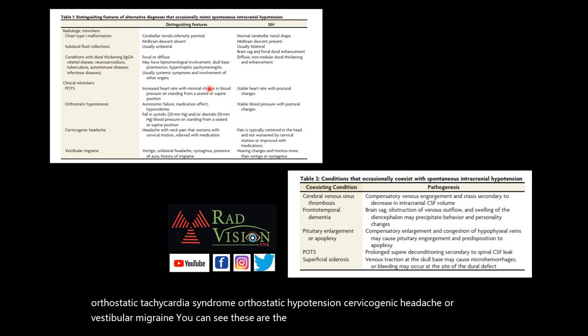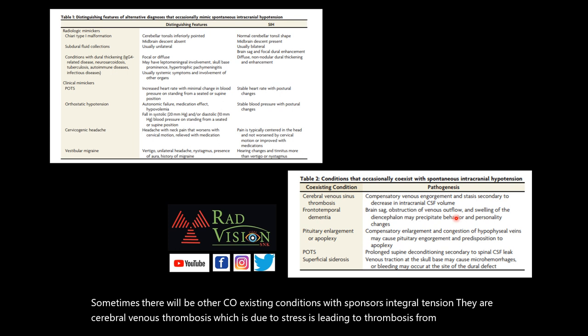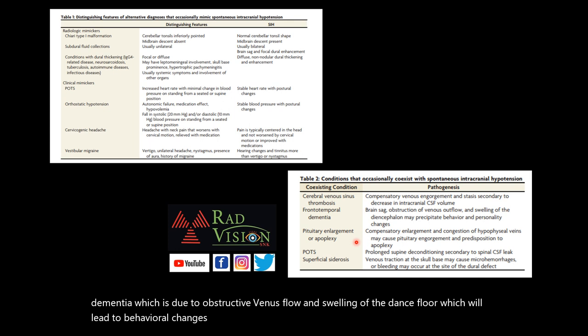There are also other coexisting conditions with spontaneous intracranial hypotension: cerebral venous thrombosis due to stasis leading to thrombosis; frontotemporal dementia due to obstructive venous flow and swelling of the diencephalon leading to behavioral changes; pituitary enlargement or hyperplasia due to congestion of superficial veins; POTS; and superficial siderosis due to venous traction at the skull base causing microhemorrhages.